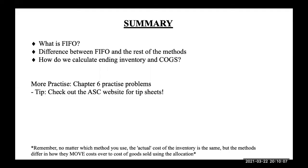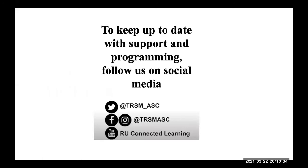To recap, we have learned what FIFO is, the difference between FIFO, average cost, and specific identification, and how to calculate ending inventory and cost of goods sold. For more practice, look at the Chapter 6 practice problems relating to FIFO. You can also check out the Academic Success Center for tip sheets, and visit the YouTube channel for more videos. Thank you for tuning in, and follow us on social media to keep up to date with support and programming.